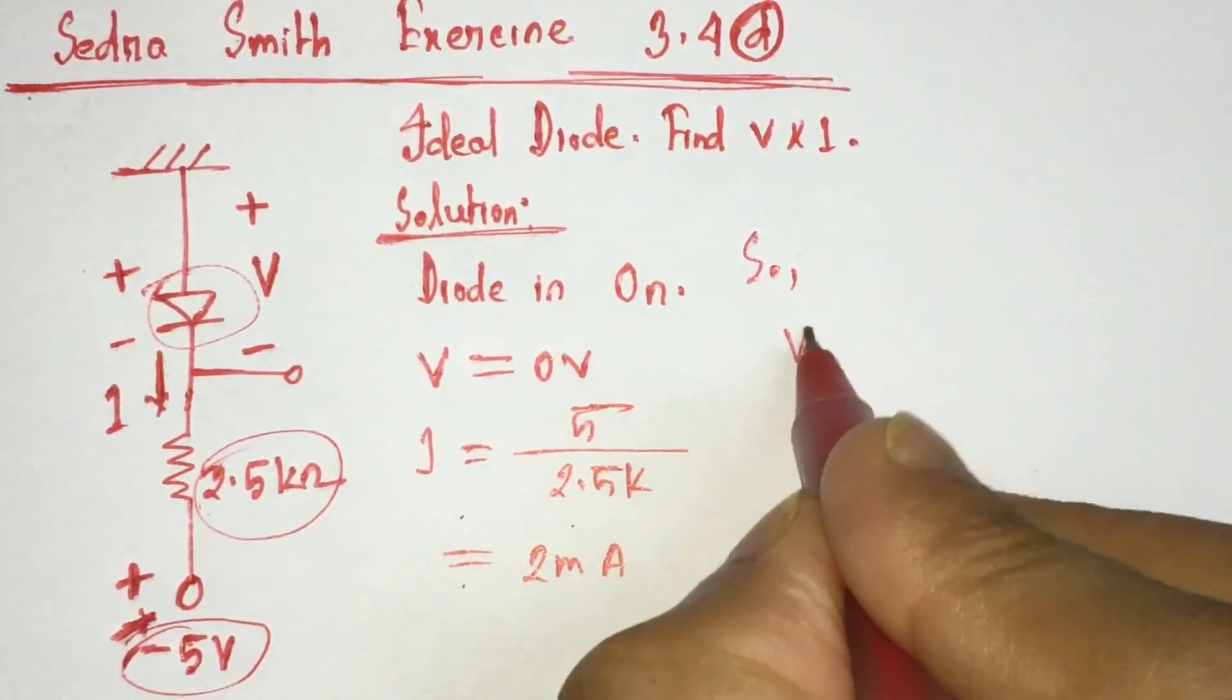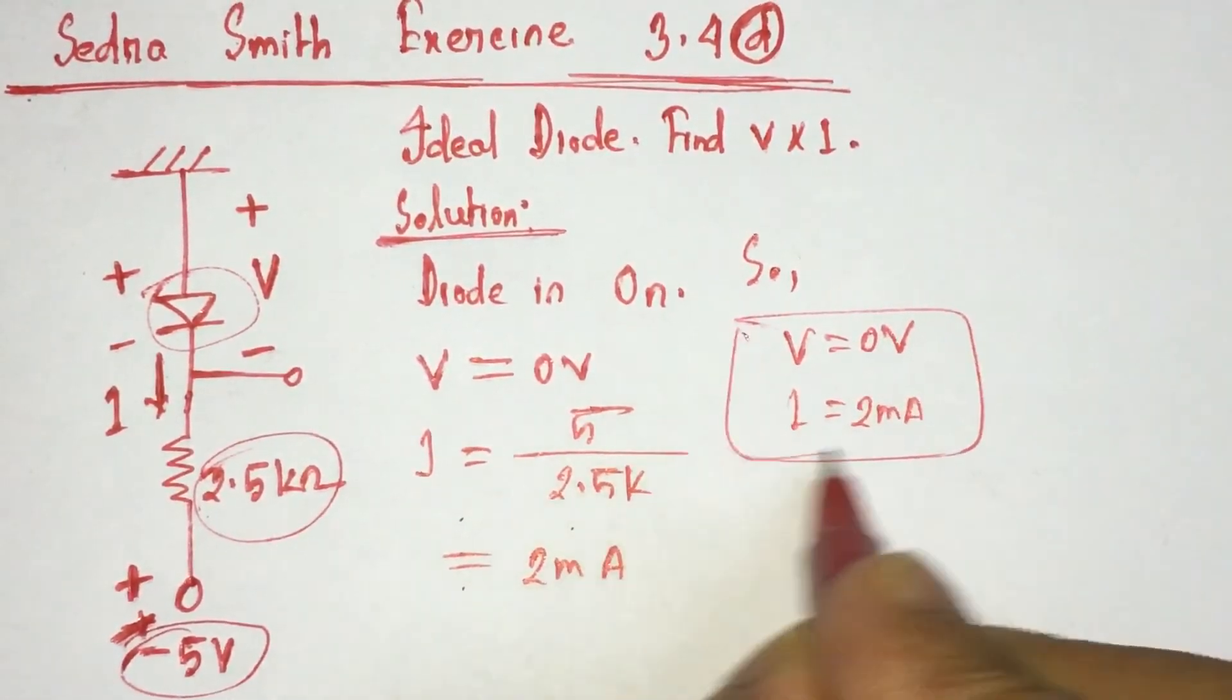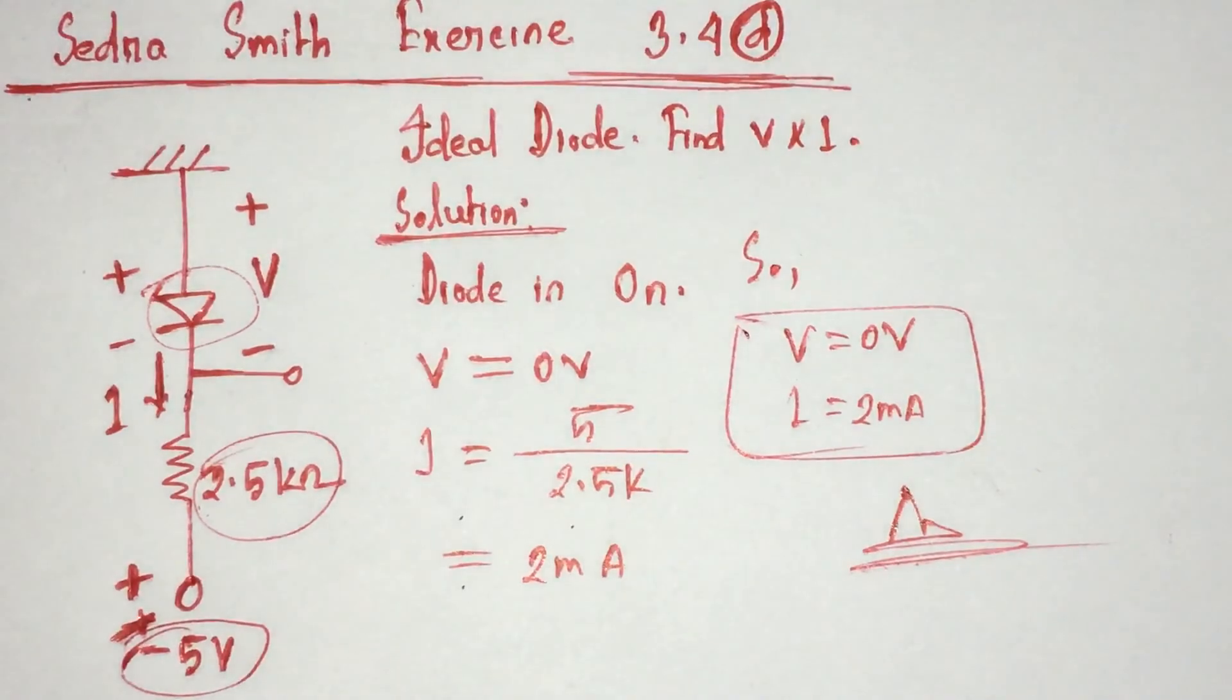So V equals 0 volt, I equals 2 milliampere. These are the answers. Thanks for watching.